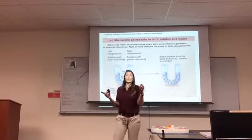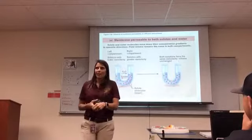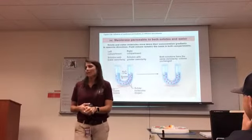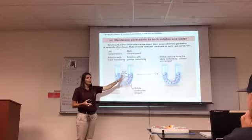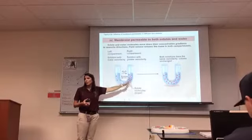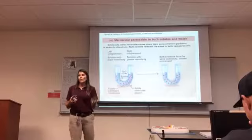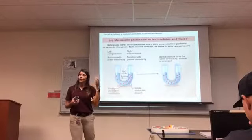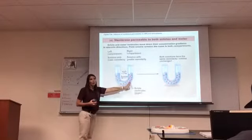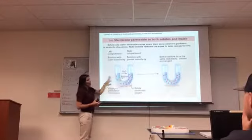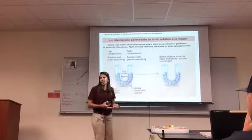Equilibrium applies to non-living aspects — fluids, chemistry. Homeostasis is for living organisms. In the selectively permeable membrane example: only water moved — not sugar — because that membrane was permeable to water but not to sugar. The water went from high to low until equilibrium. Since only water moved, what do we call that? Osmosis.